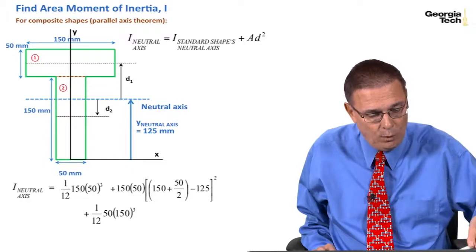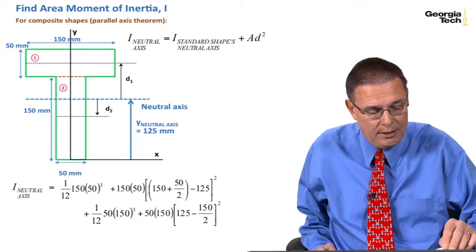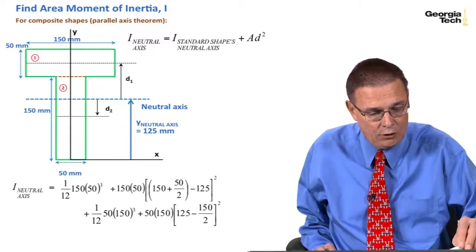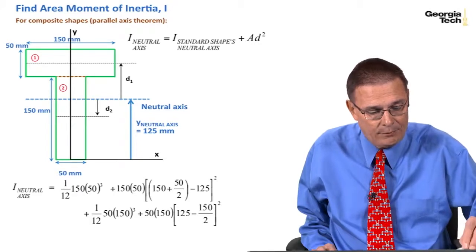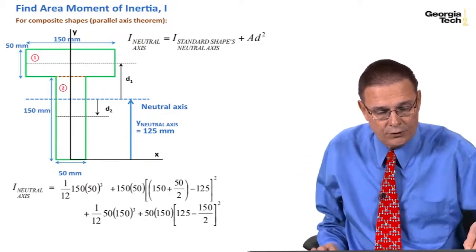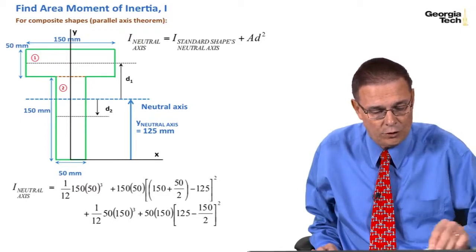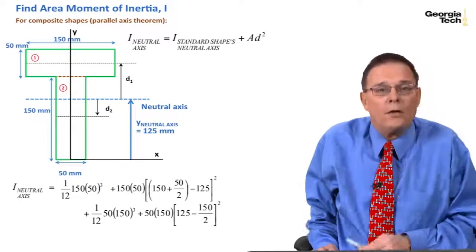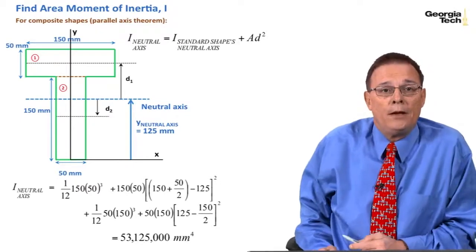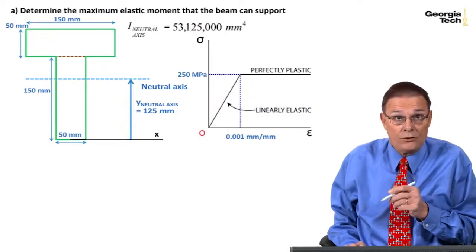I've got 1/12 base times height cubed, plus area times d, in this case, d2 is 125 minus the distance to the center of this rectangle, neutral axis to this rectangle, which is 150 divided by 2, and I square all that. And so, when you do that math, this is the area moment inertia you arrive at.